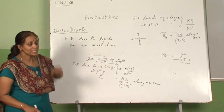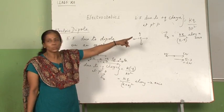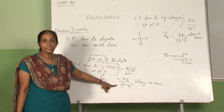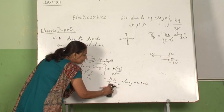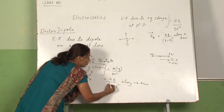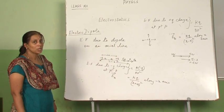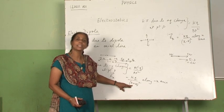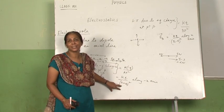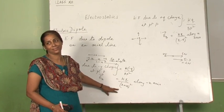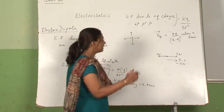Now tell me whether E_A is greater or E_B is greater. Just see the expressions — the numerator is kq in both. The denominator for E_A is (x plus a) the whole square, and for E_B it is (x minus a) the whole square. Since (x plus a)² is greater than (x minus a)², E_A is smaller and E_B is the greater value.